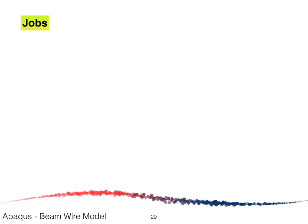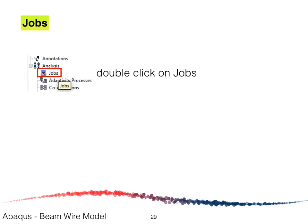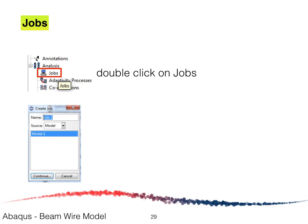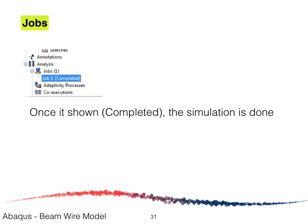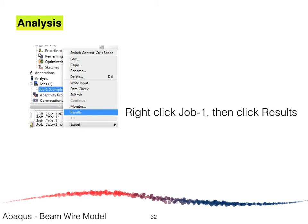To create and submit the input file, double-click on Jobs. In the Create Jobs window, click Continue and then OK. Right-click on Job 1 and click Submit. Abaqus will run for a few minutes and the status will show Complete when the simulation is done. Right-click on Job 1 and click Results to view the output.